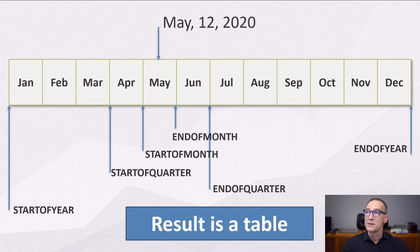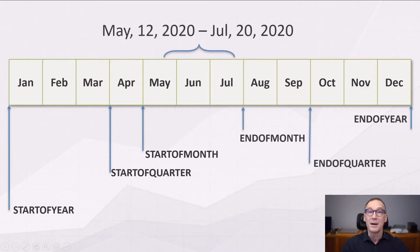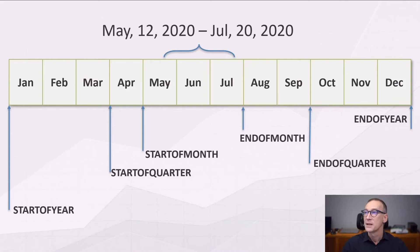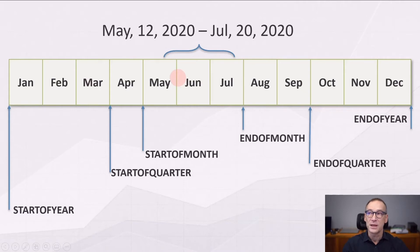What happens if the filter context contains multiple dates — a selection containing a set of dates? In that case, these functions work using the first or the last date of the current selection.